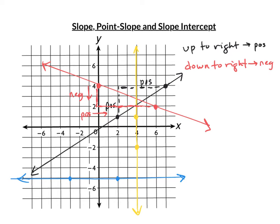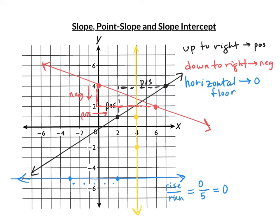The blue line is a horizontal line. Counting the run between two points gives five, and it doesn't rise at all — the rise is zero. So rise over run is zero over five, which is zero. A horizontal line has slope zero. I tell my students it's like the floor — look at how the word 'floor' is spelled, it has those O's in it. Think of those O's as zeros. The slope of the floor is zero.